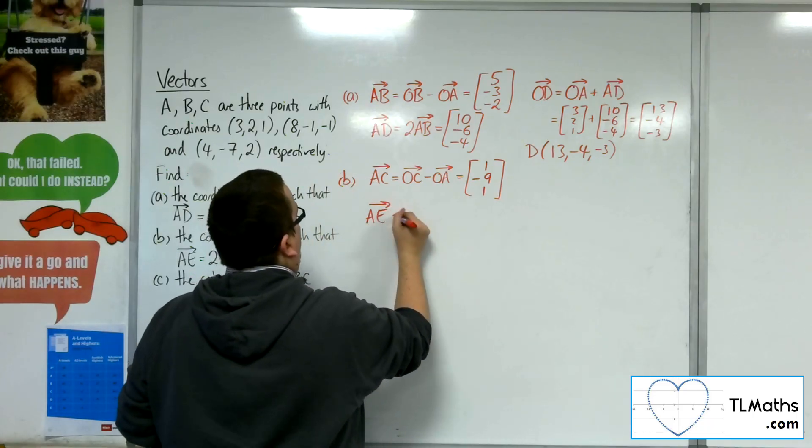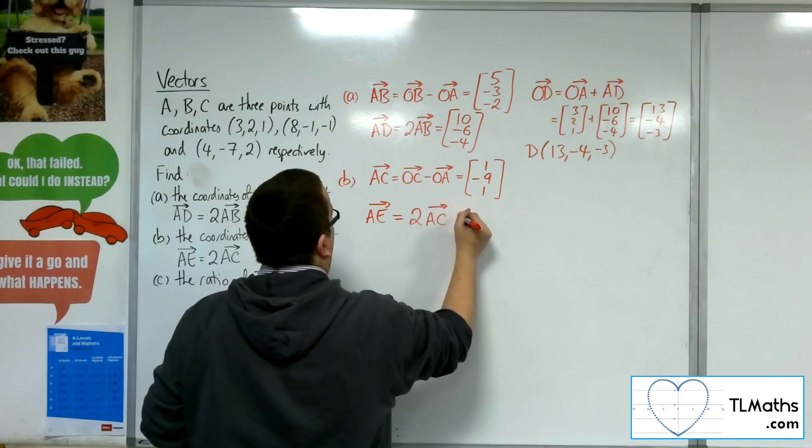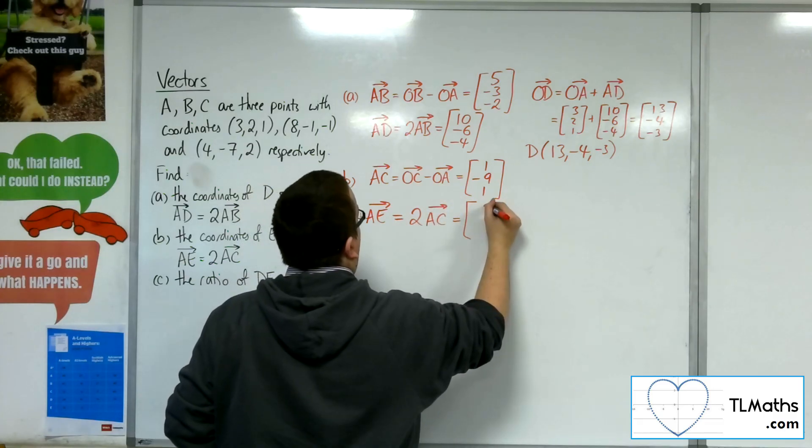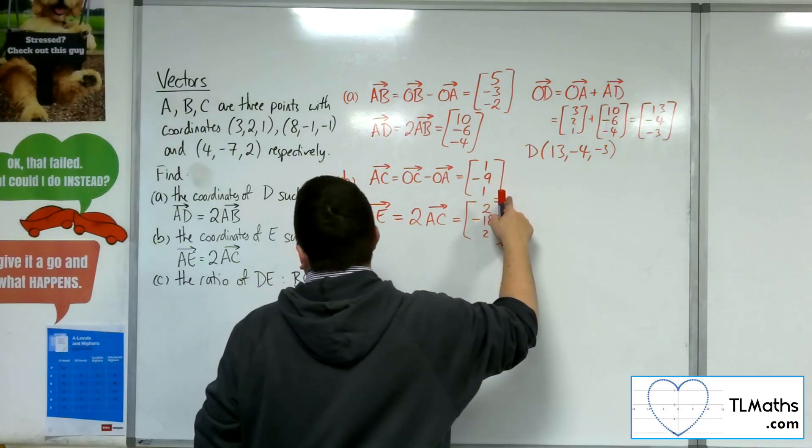AE is 2 lots of AC. So that will be the vector 2 minus 18, 2, doubling each of those elements.